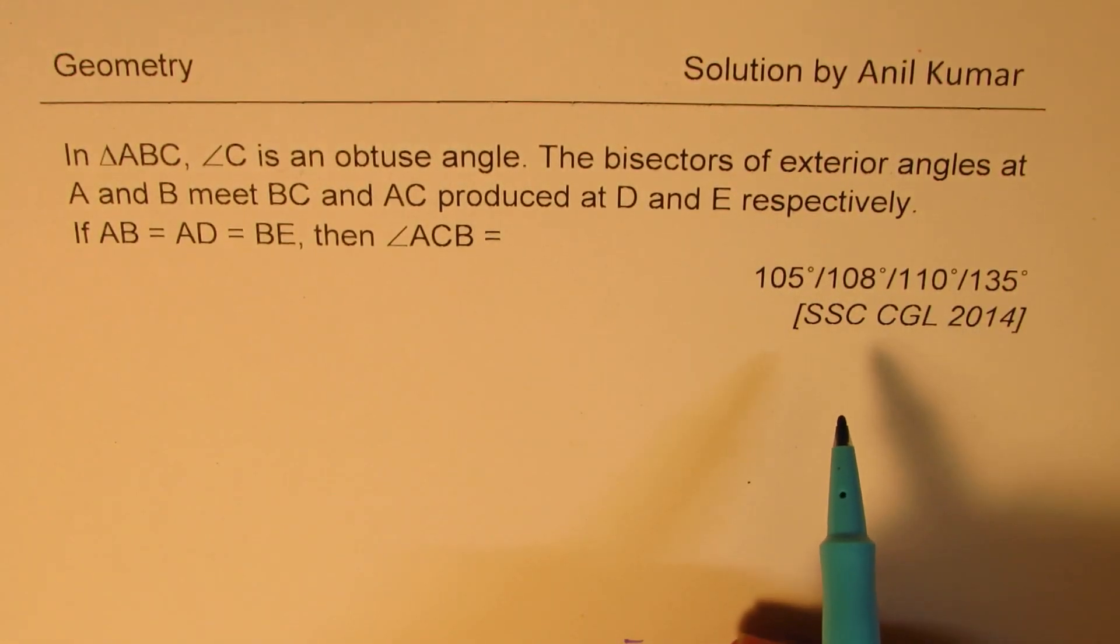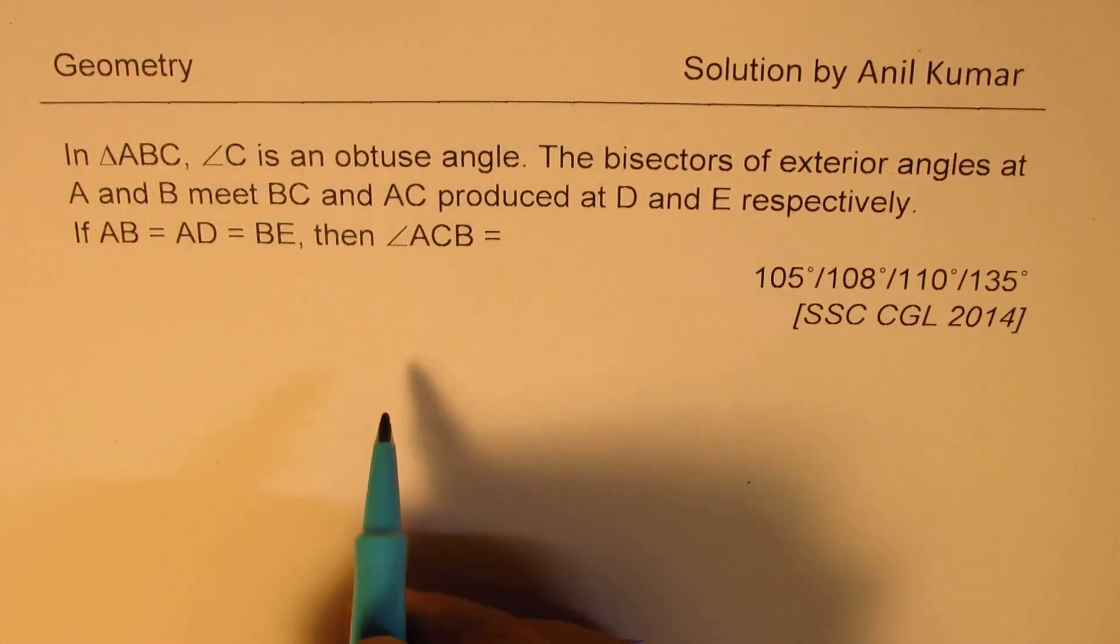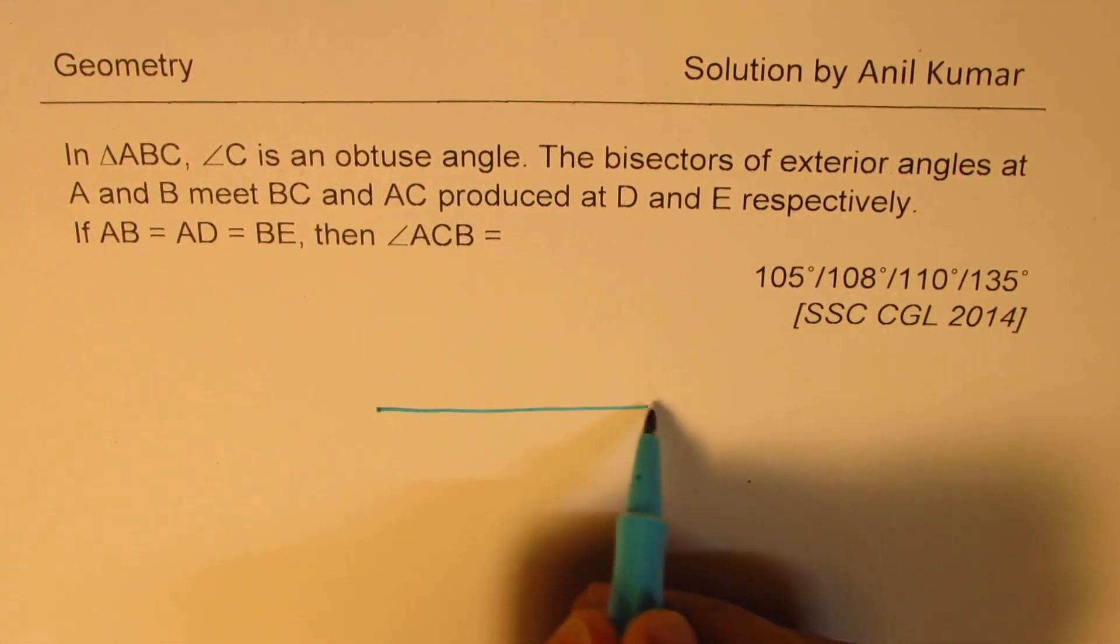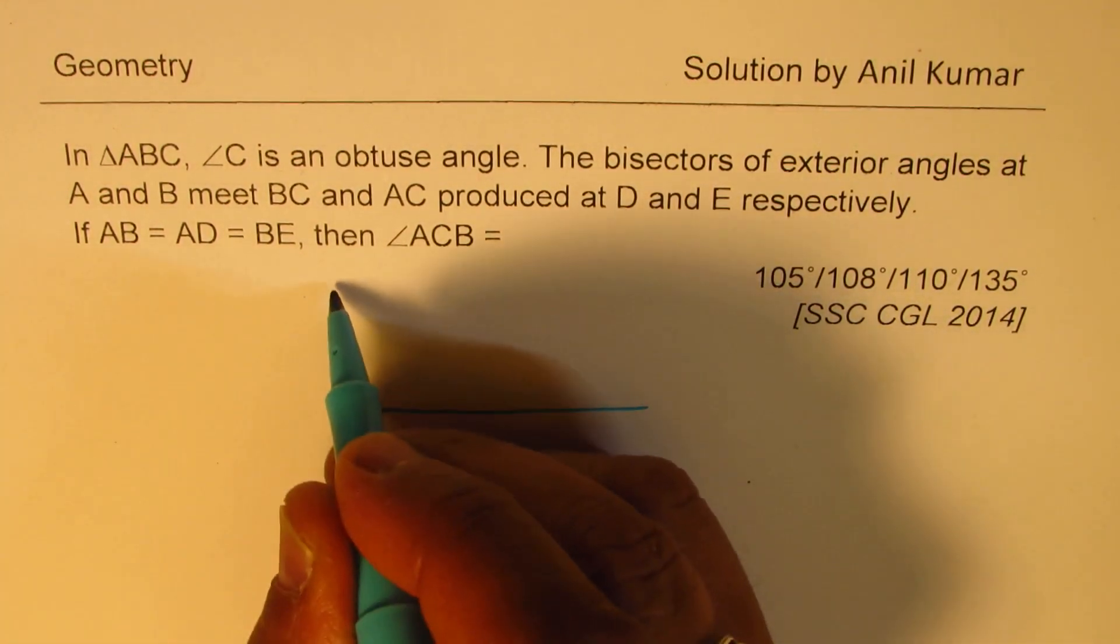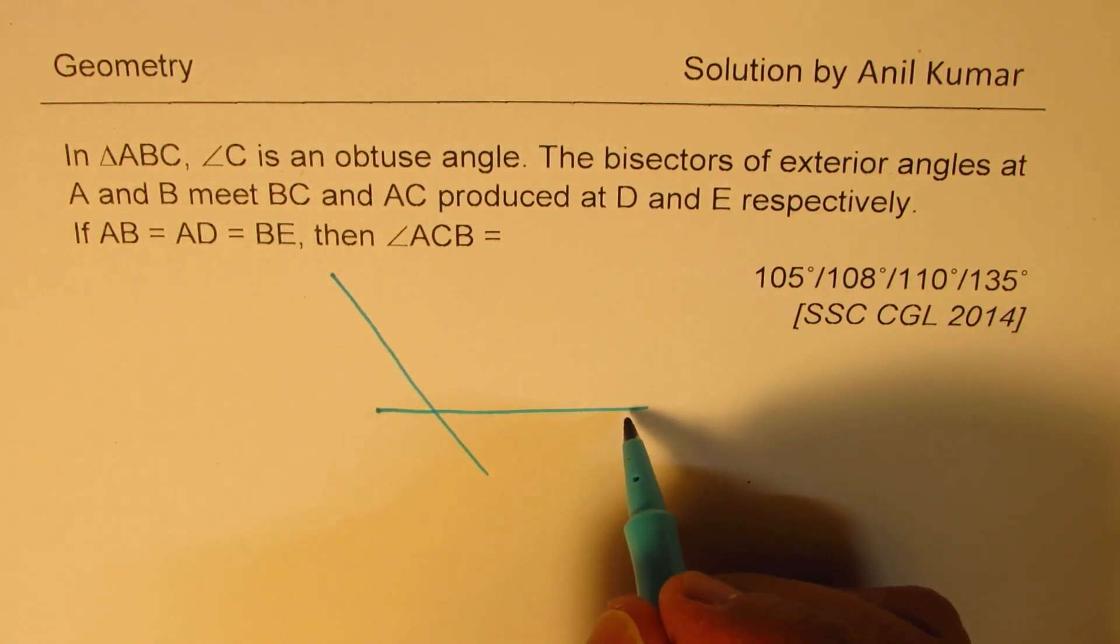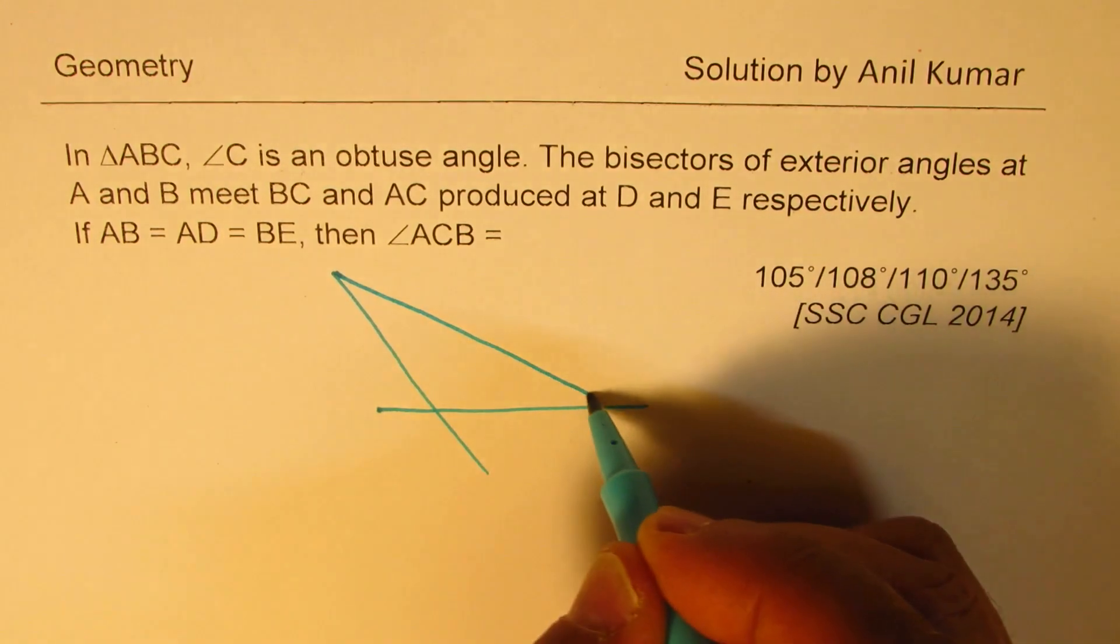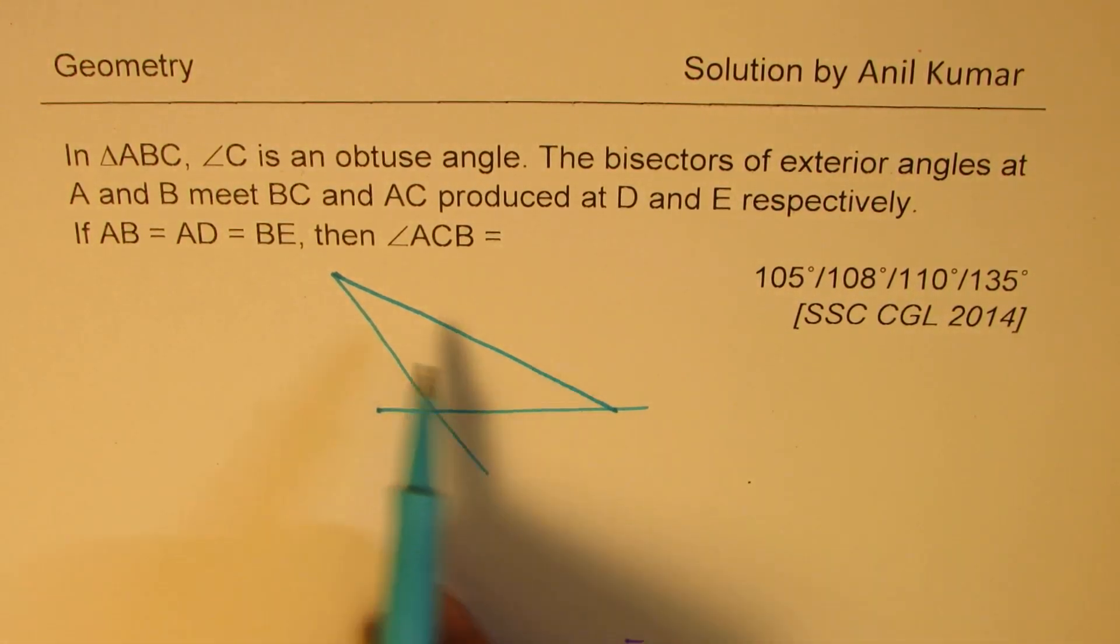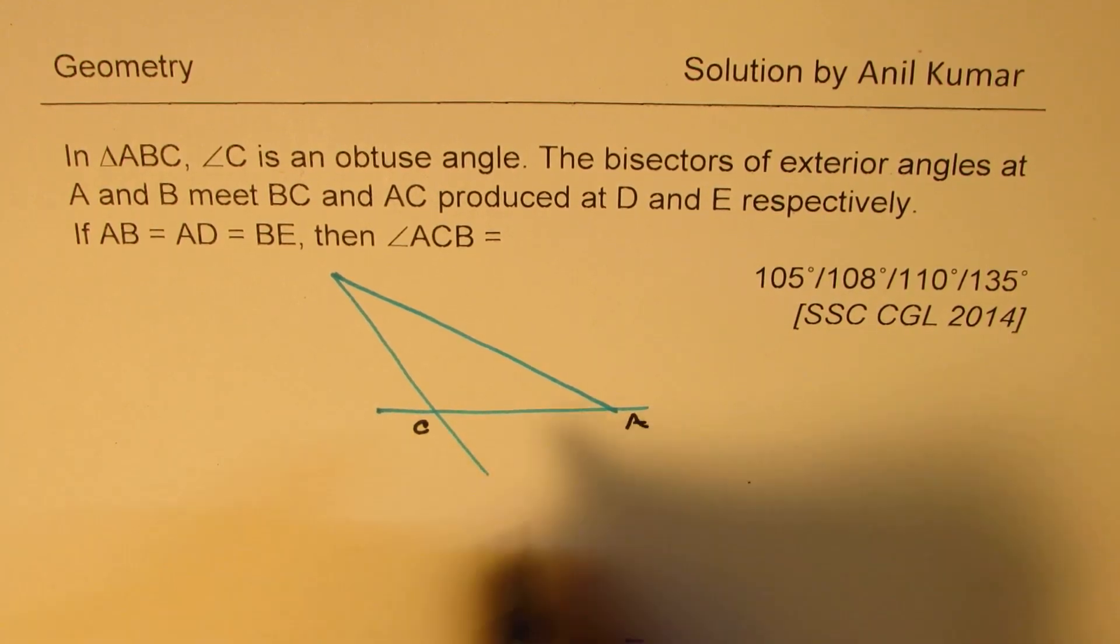Then we are going to solve it. So we have an obtuse angle at C. So let me just sketch a triangle here. And let's say this is an obtuse angle at C. And here we have angle A, B and C. So let's just connect them. So we get our triangle ABC.